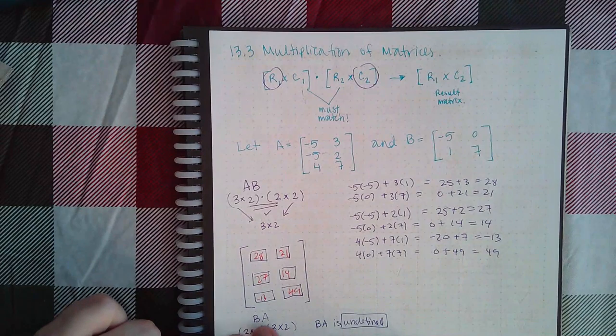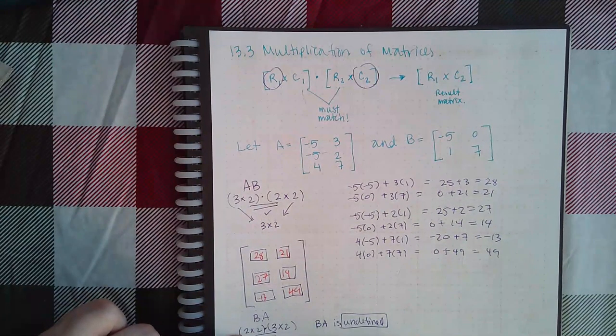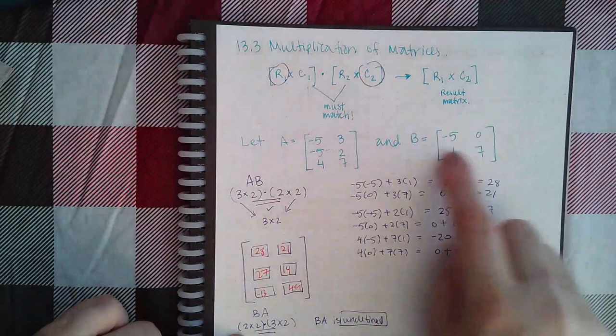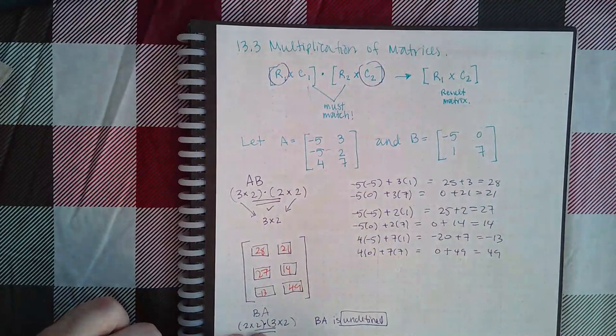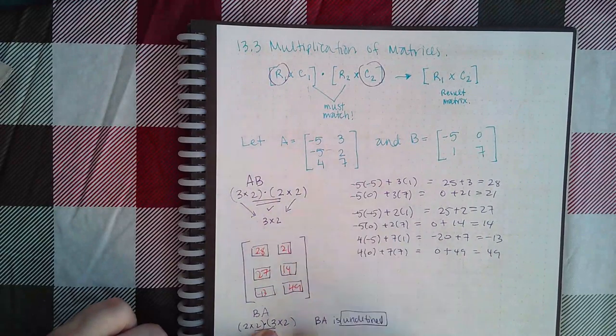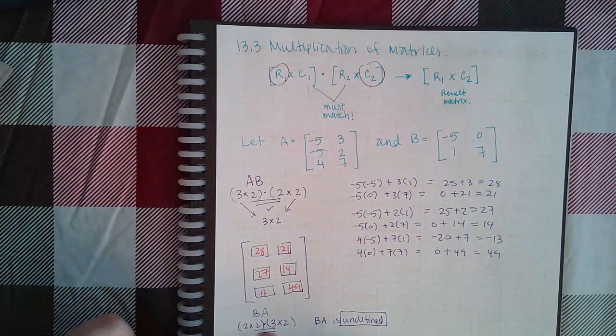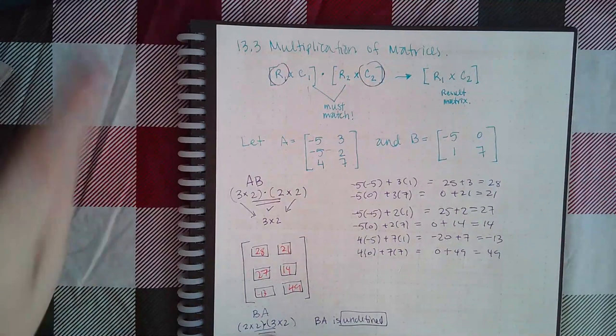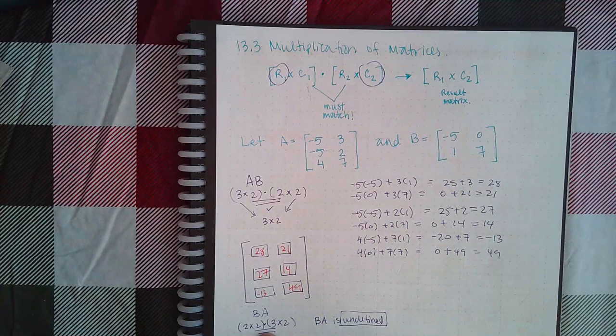Now what if they asked me to do it in reverse? What if it asked me to do B times A? Then I would have to put B dimensions first. So B is a two-row by two-column matrix. A is a three-row by two-column matrix. So I wrote that down. These do not match. And when they do not match, that means you cannot perform multiplication because there's not enough rows or columns in one of the particular matrices to get everything done.